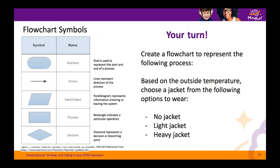Now it's your turn. We've provided you with some of the basic symbols that are used to create a flowchart, and using the legend, we'd like you to create a flowchart to represent the following process: based on the outside temperature, choose a jacket from the following options — either no jacket, a light jacket, or a heavy jacket. Pause the webinar now and try to come up with a flowchart to represent this process.